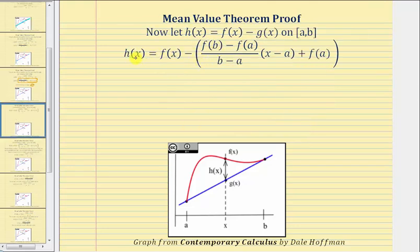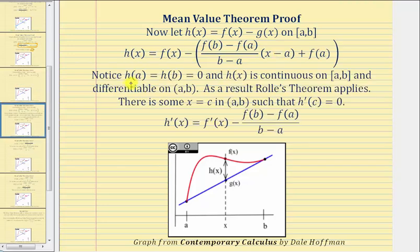After we perform this substitution we have the equation for h of x. Notice that h of a equals h of b, which both equal zero, because at x equals a and x equals b the vertical distance between f of x and g of x is zero. Since h of x is continuous on the closed interval from a to b and differentiable on the open interval from a to b, Rolle's theorem applies and therefore there is some x value c in the open interval such that h prime of c is equal to zero.